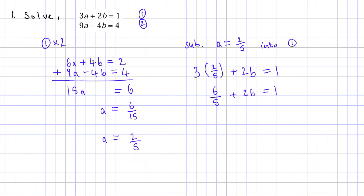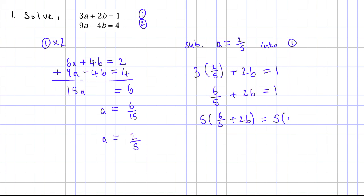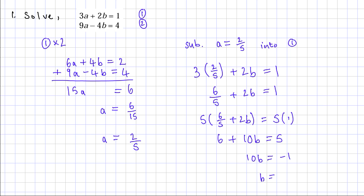I'll multiply all terms by 5 to remove the fraction, multiplying both sides to keep it balanced. This gives 6 plus 10b equals 5. Taking away 6 from both sides gives 10b equals minus 1. Dividing by 10 gives b equals minus 1 over 10. So my values are a equals 2 over 5 and b equals minus 1 over 10.